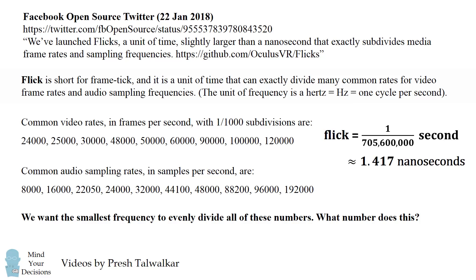Using brute force, we can calculate it's 705,600,000. From this number, the unit of flick can be defined as 1 over this, which is approximately 1.41 nanoseconds. What's interesting is that we can actually derive this number using basic number theory — and that's what I want to go through in the rest of the video. So where does this mysterious number 705,600,000 come from? Let's figure it out.